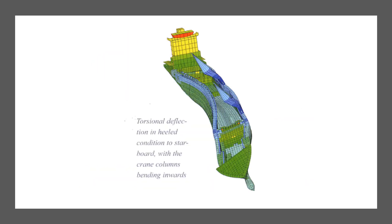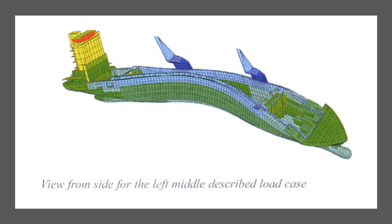This is showing the torsional deflection of the same vessel in a heeled condition to starboard. The cranes are installed on the port side, and here the vessel is listing to the starboard side, so you can see the torsional deflection in heeled condition with the crane columns bending inwards. The side view shows the same scenario — the multi-purpose vessel with cranes on the port side listing to starboard — and demonstrates how the stresses and torsional deflection are acting on the ship.